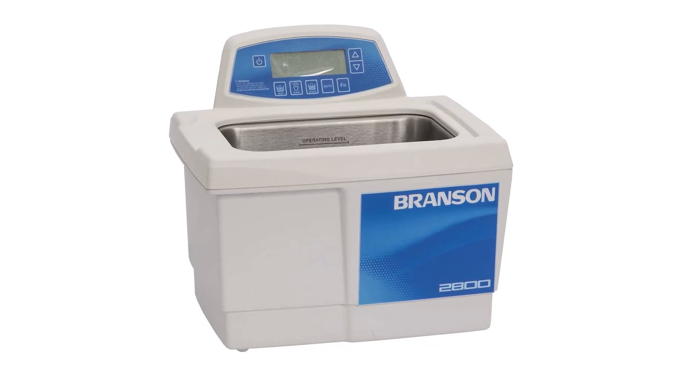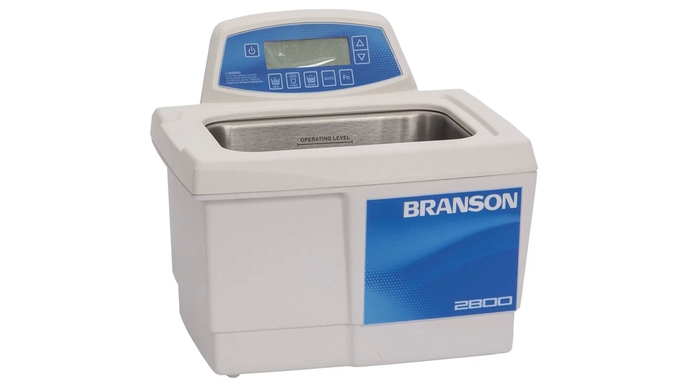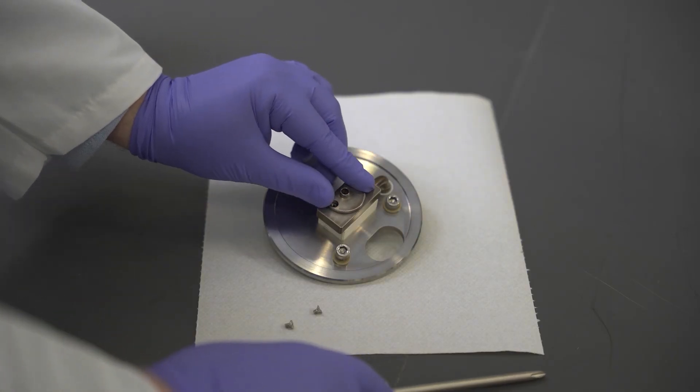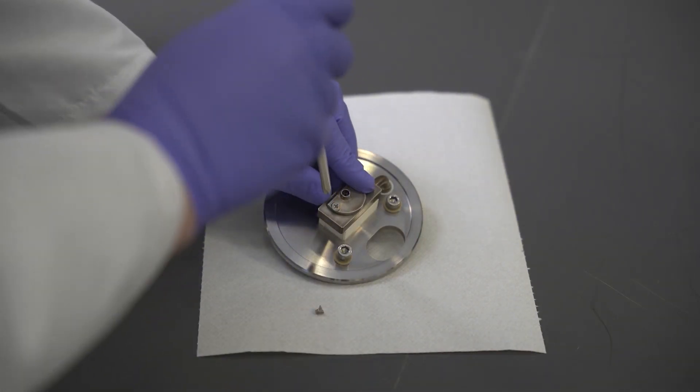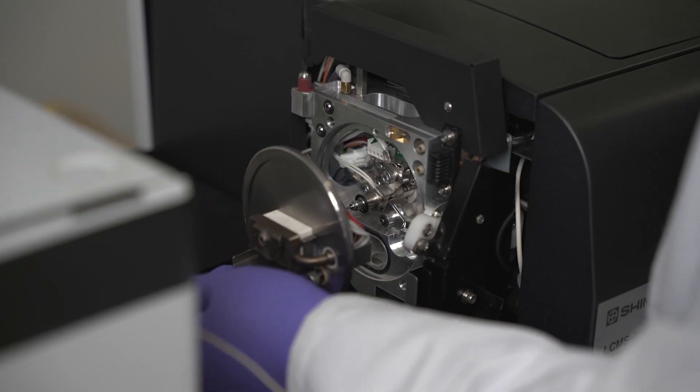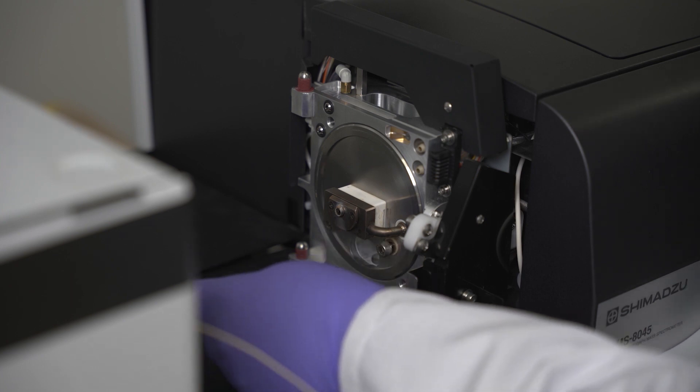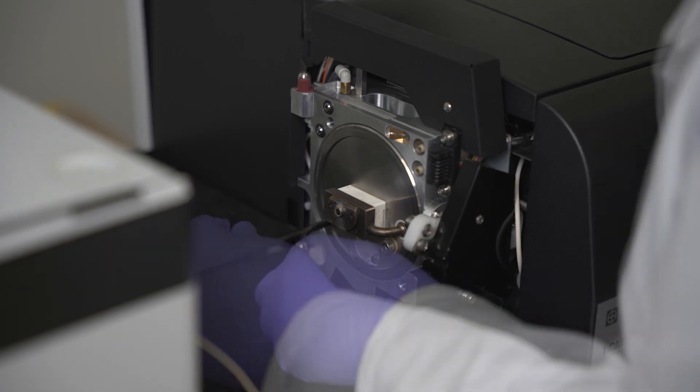The screws and sampling cone can be cleaned in an ultrasonic bath with methanol solution. Once dry, reassemble the cleaned sampling cone, heated block, and heater flange, and reinsert them into the instrument. Retighten the bolts with the Allen wrench so that they are snug, but do not over tighten them.